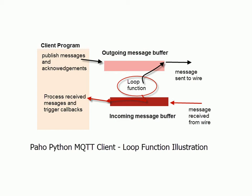That callback is responsible for then processing that message further. If you don't call the loop function, then those messages incoming and outgoing aren't processed, and the callbacks aren't triggered. If you don't have a callback for the appropriate incoming message type, then basically that incoming message type is just ignored.